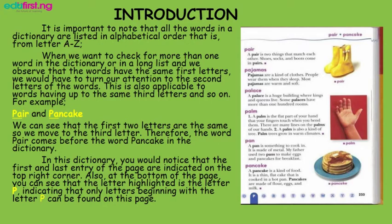We can see that the first letters of the words are the same, so we turn our attention to the third letters. The third letter of 'pear' is 'i' and that of 'pancake' is 'n'. Knowing fully well that letter 'i' comes before letter 'n' in the English alphabet, we can see that 'pear' comes before 'pancake' in the dictionary.